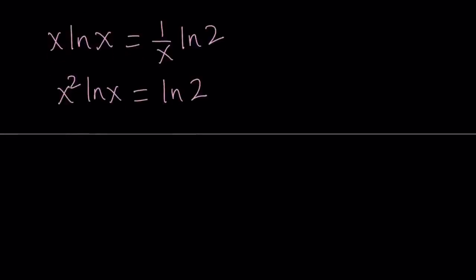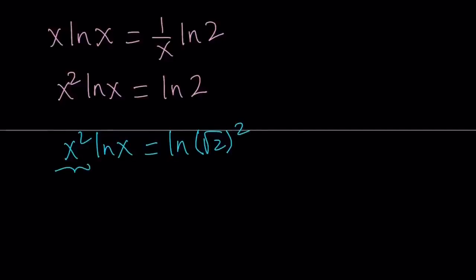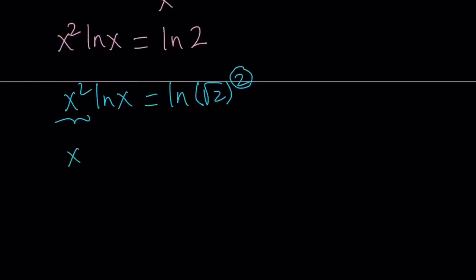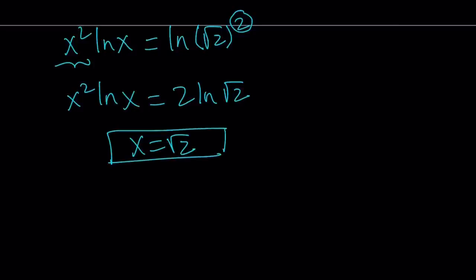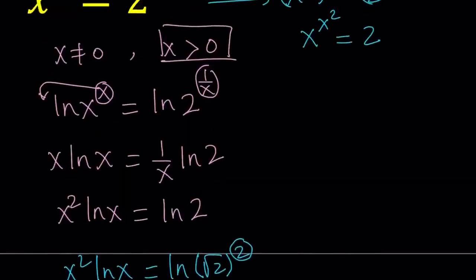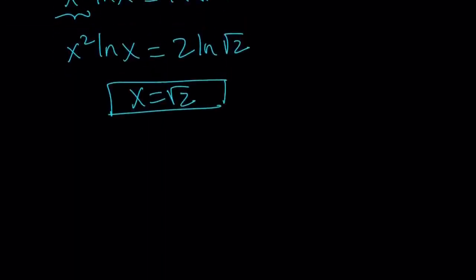This equation is nice because all the variables are on one side. But looking at x squared ln x equals ln 2, x can't simply be 2 because that gives 4 ln 2, not 1 times ln 2. So here's how to proceed: write 2 as square root of 2 squared, so ln 2 becomes 2 ln of square root of 2. Now by comparing both sides, x equals square root of 2 works. You can also verify it satisfies the original equation. But is that the only solution? That is the million-dollar question.